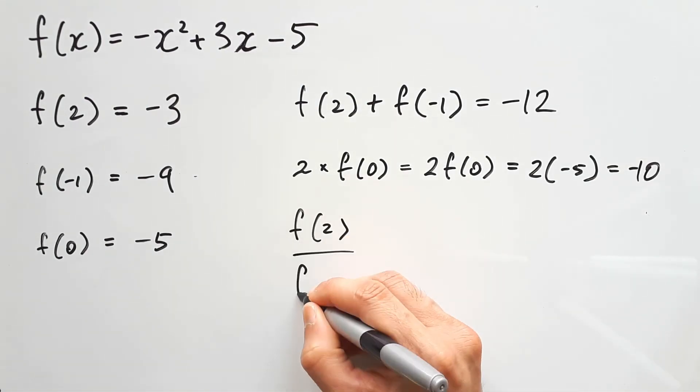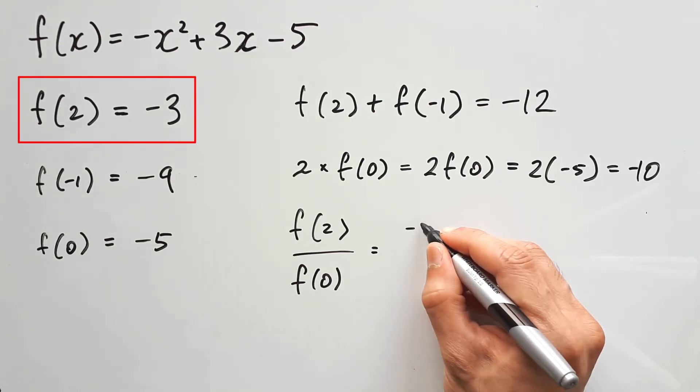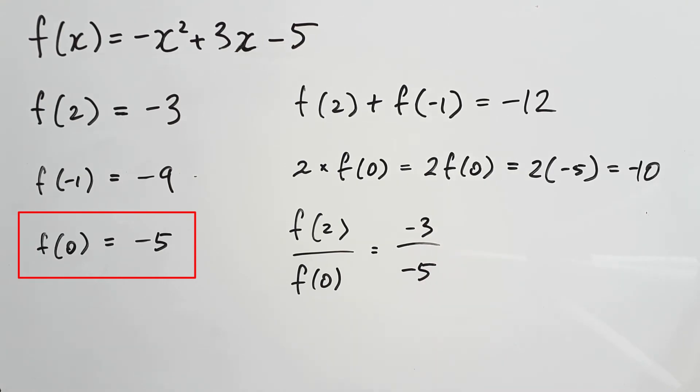And this last one, f of 2 over f of 0, looks a little bit difficult, but it's really not. It's just the same process as before. All you need to do is replace f of 2 for the value negative 3 and replace f of 0 for negative 5, giving us 3 over 5 when you simplify it.